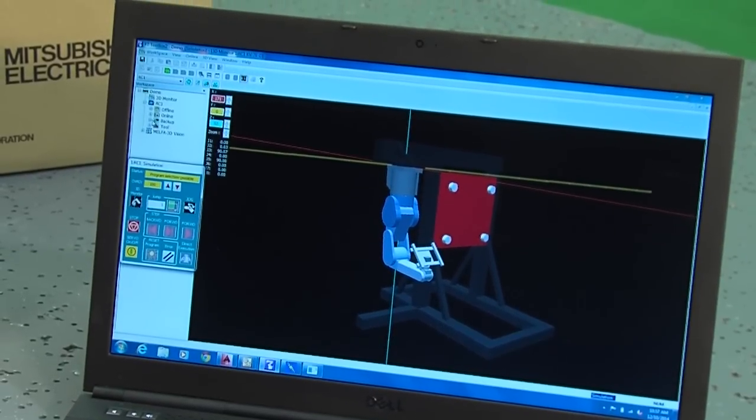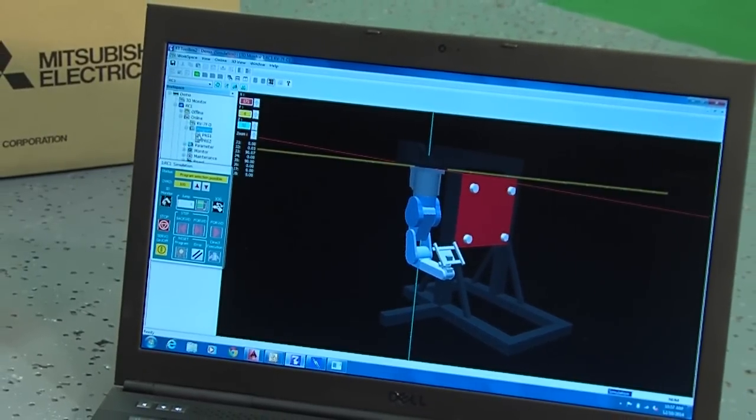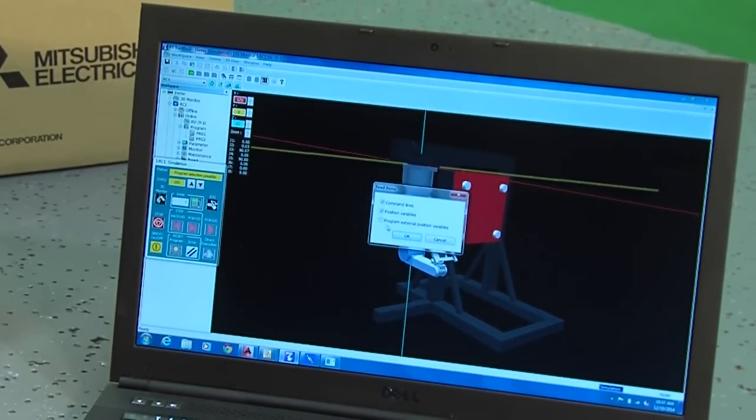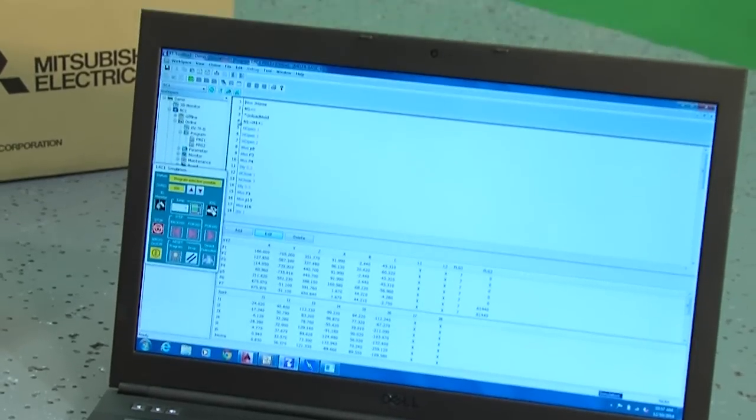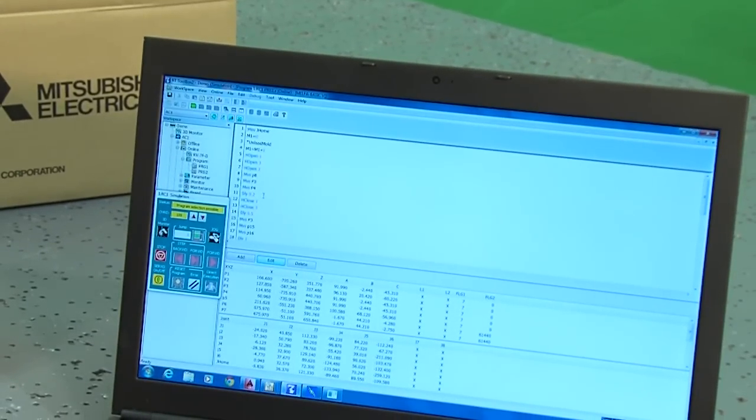Once I have my program in here. This is online. I can open it up. I can view it. I can make changes just as if I was in the robot teach pendant programming and typing in code. It's a lot faster in here.